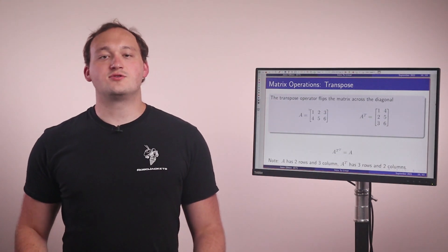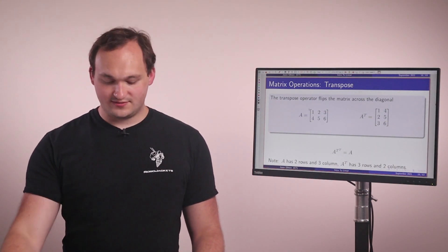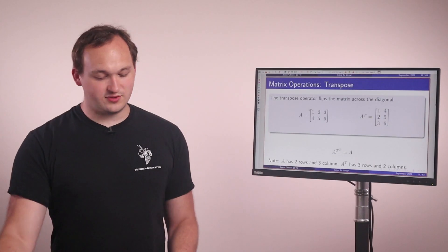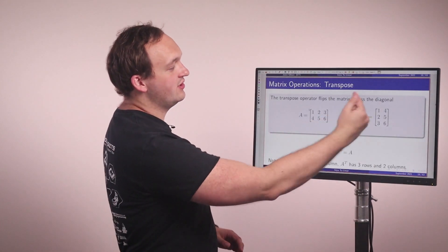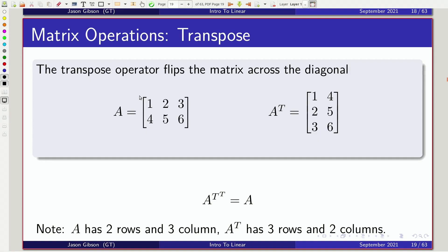So now we have the transpose operator for matrices. So this operator allows us to flip a matrix. And we're going to be flipping the matrix around a diagonal line that goes through the center of the matrix. And what we're going to do is we're going to take the values like four and two and flip it across. The important property to remember is that a double transpose is equal to the original value.